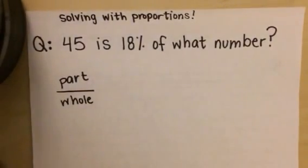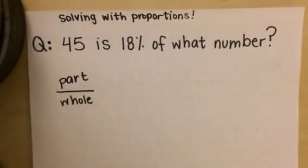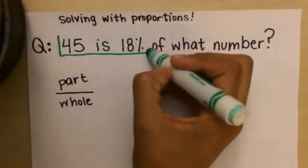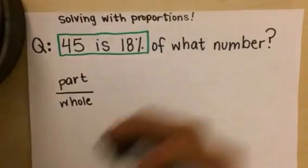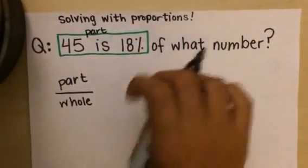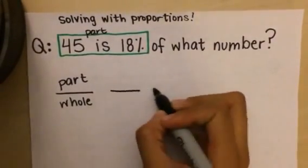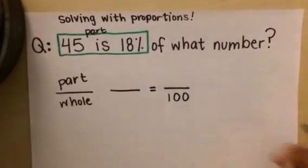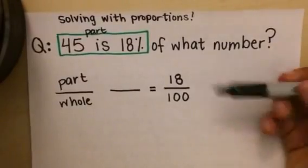45 is 18 percent—45 is not 100 percent. This tells me that 45 is a part because 18 is a part, right? We know that percents are always out of 100, so I know that if I have 18 percent of something, that is a part.